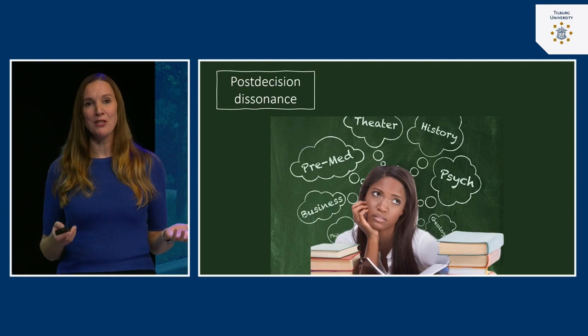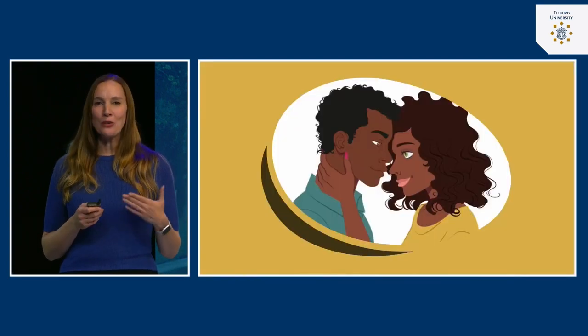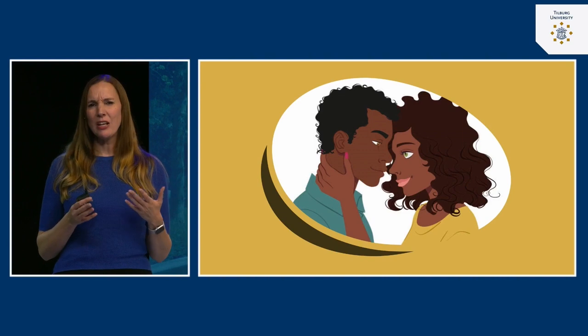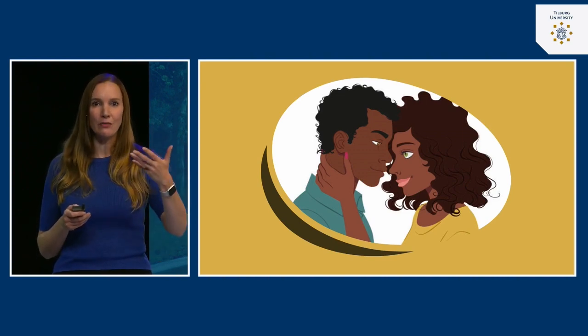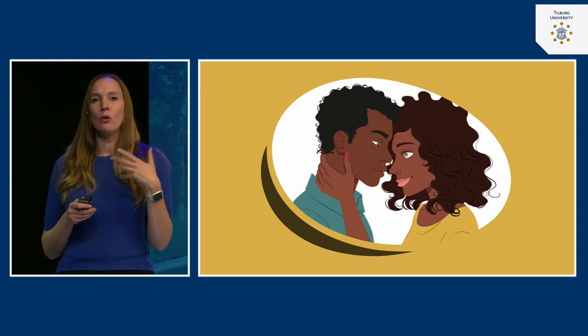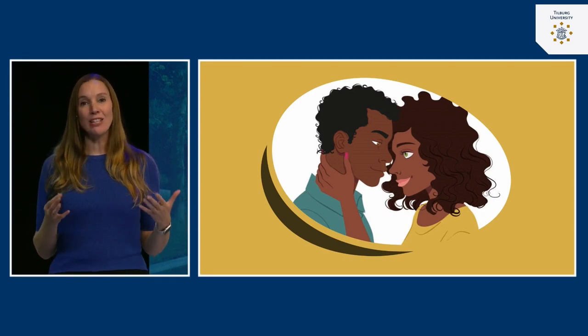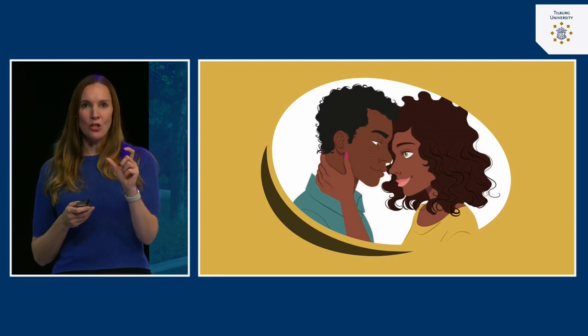You see post-decision dissonance in many different domains. As a relationship researcher, I love witnessing this in relationships. When people are in a happy relationship, they often devalue alternative partners. They have very positive illusions about their partner — seeing them as the most attractive person, far more attractive than they objectively are, or as having many admirable qualities others might not even notice. Thinking your partner is the best is an automatic way of protecting your relationship, and having positive illusions about your partner is actually very healthy.